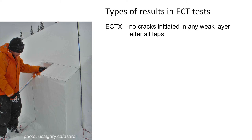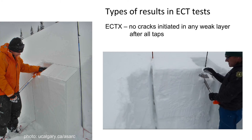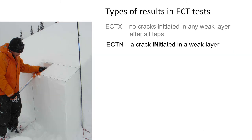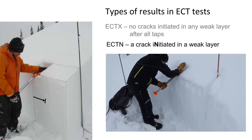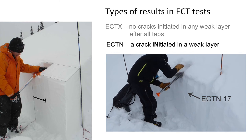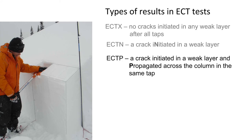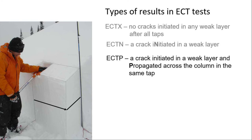When doing an extended column test, there are three types of results. ECTX means you did all of the tapping and no cracks initiated in any weak layer. ECTN means a crack initiated or started in a weak layer but did not propagate across the column. The third type of result is an ECTP, when a crack initiates in a weak layer and propagates quickly across the column as a result of the same tap.